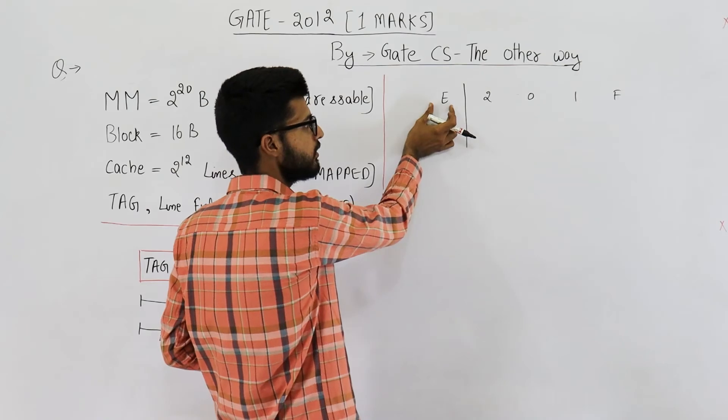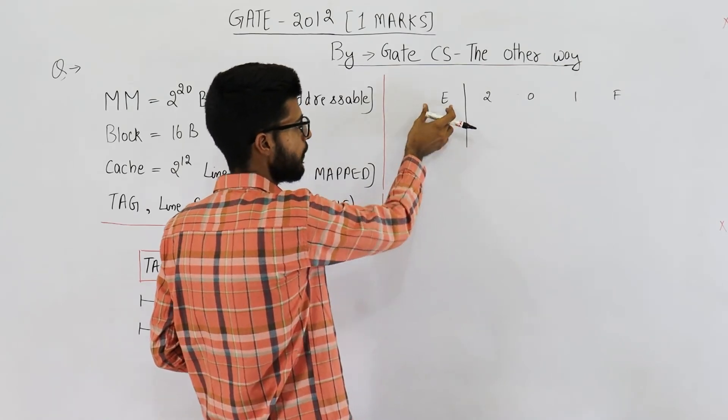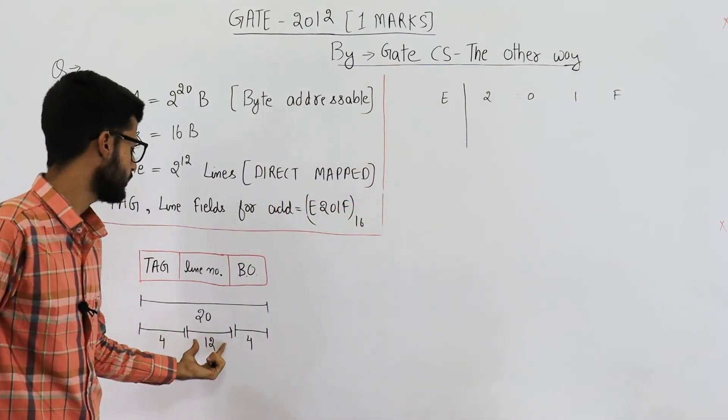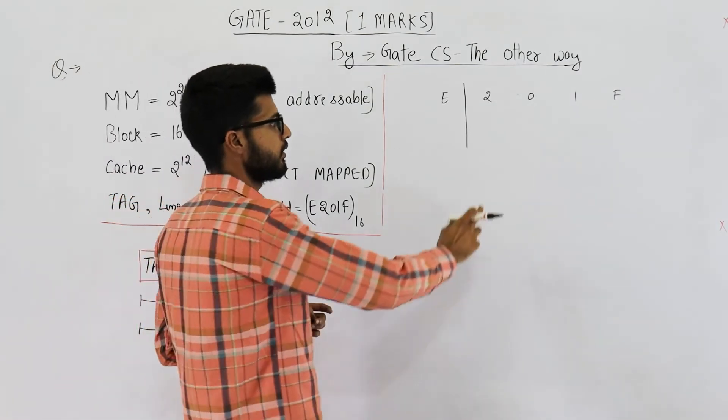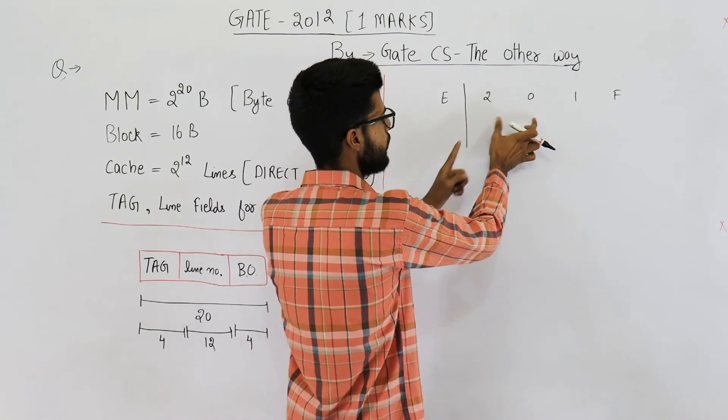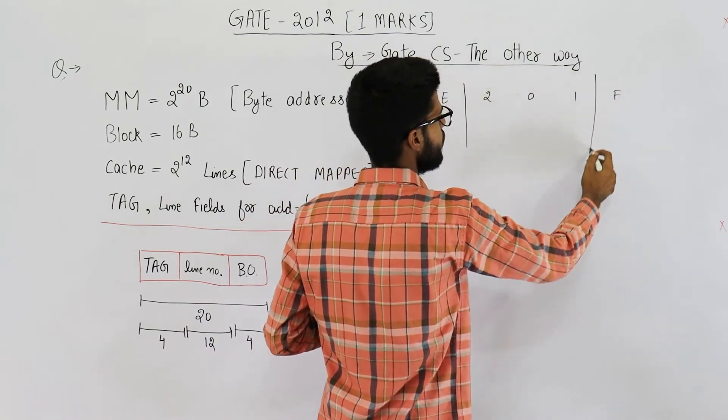You know one digit in hexadecimal is 4 bits. Second split is 12. So 12 means 3 hexadecimal digits. This is 4, this much is 8 and this much is 12.